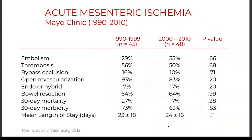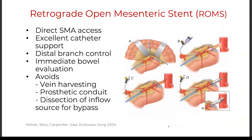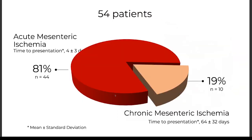The nice things about ROMS (Retrograde Open Mesenteric Stenting): direct SMA access, you can control side branches, evaluate bowel immediately, no need to harvest vein or mess with conduit or aortic clamp. My advice to fellows: don't use a short sheath or you will irradiate your hands — use a longer sheath like a 50-centimeter sheath to stay away from the radiation.